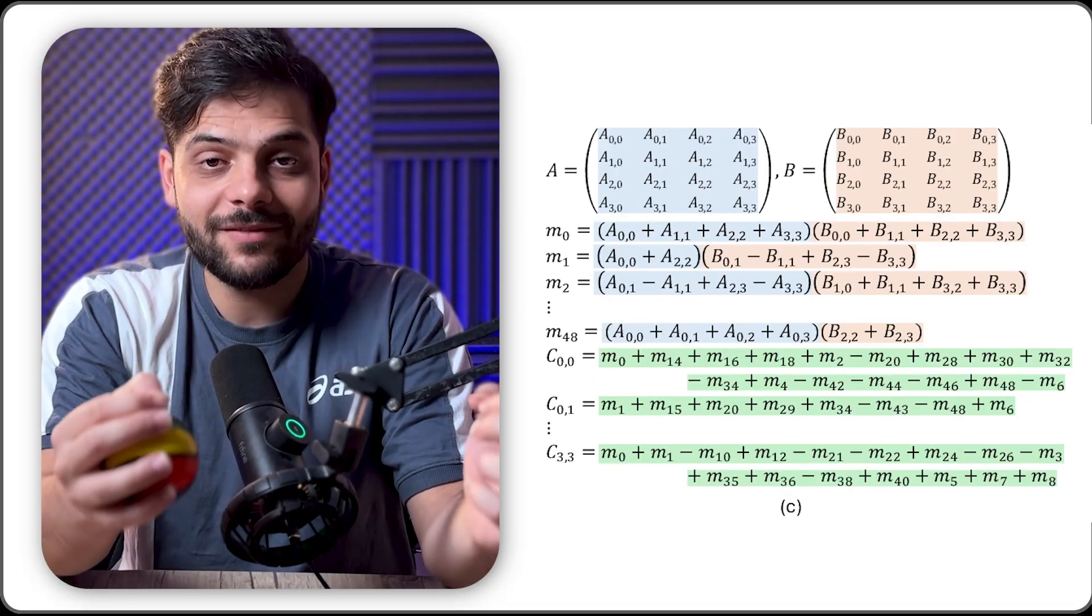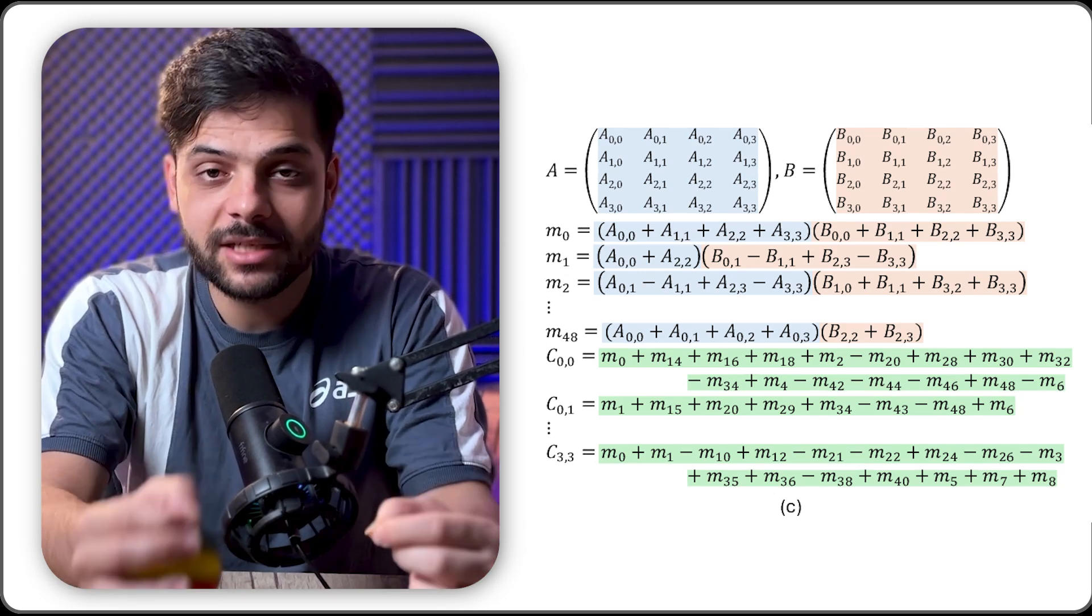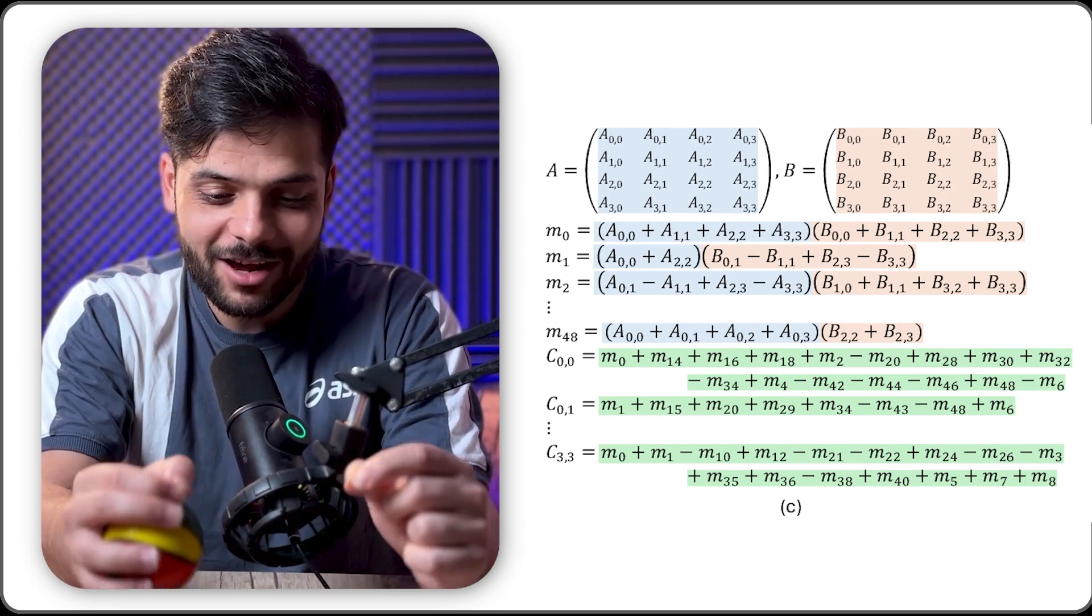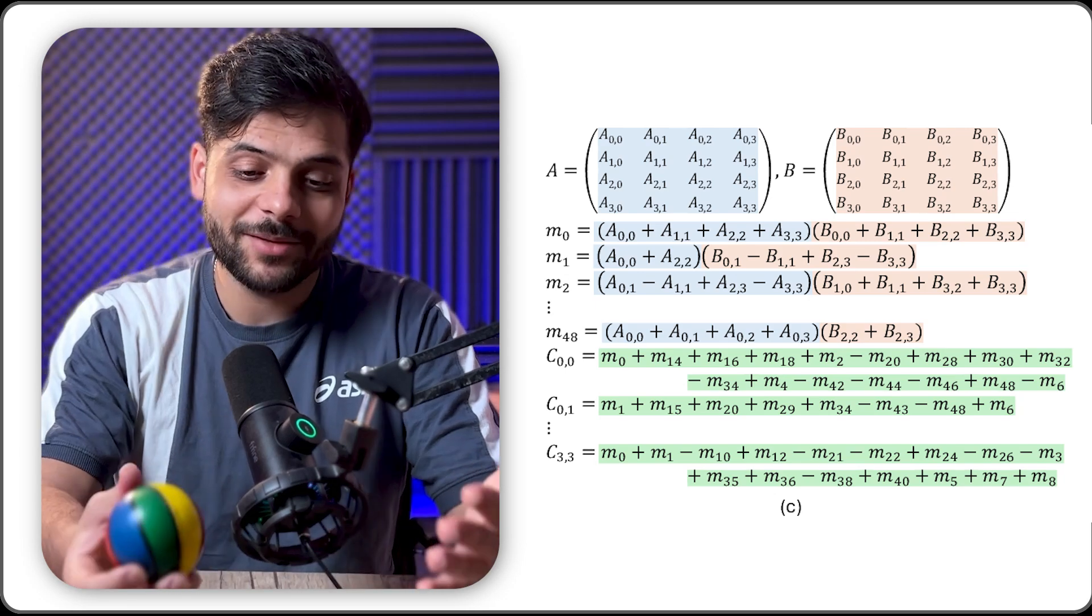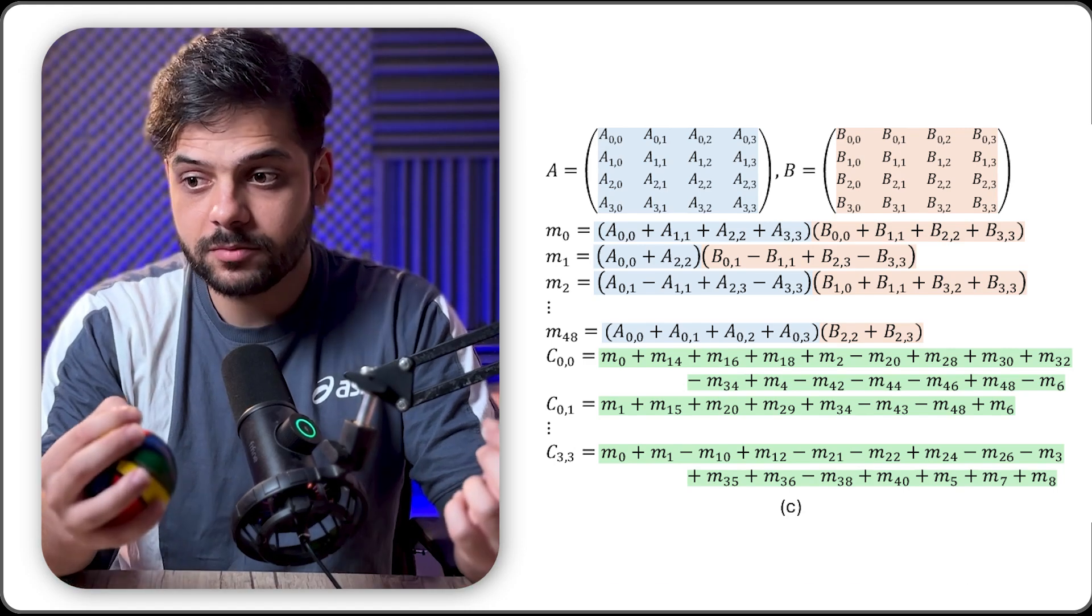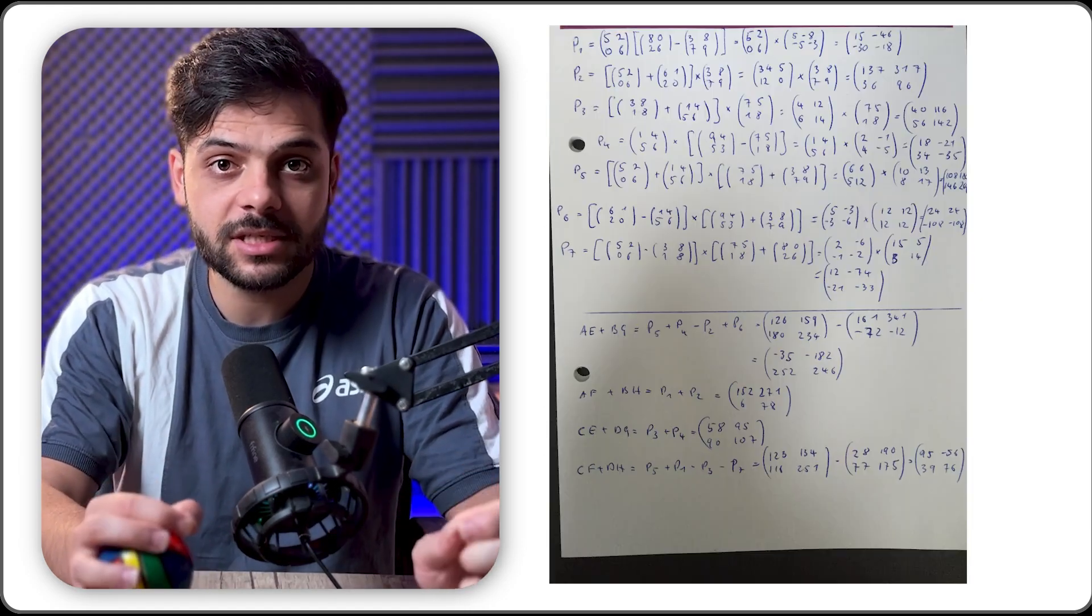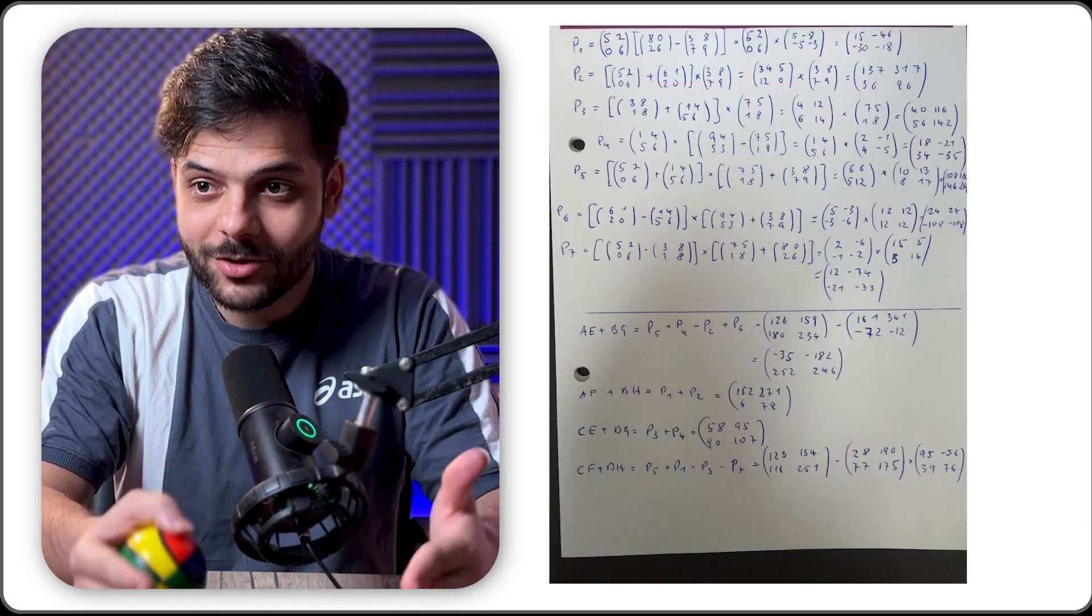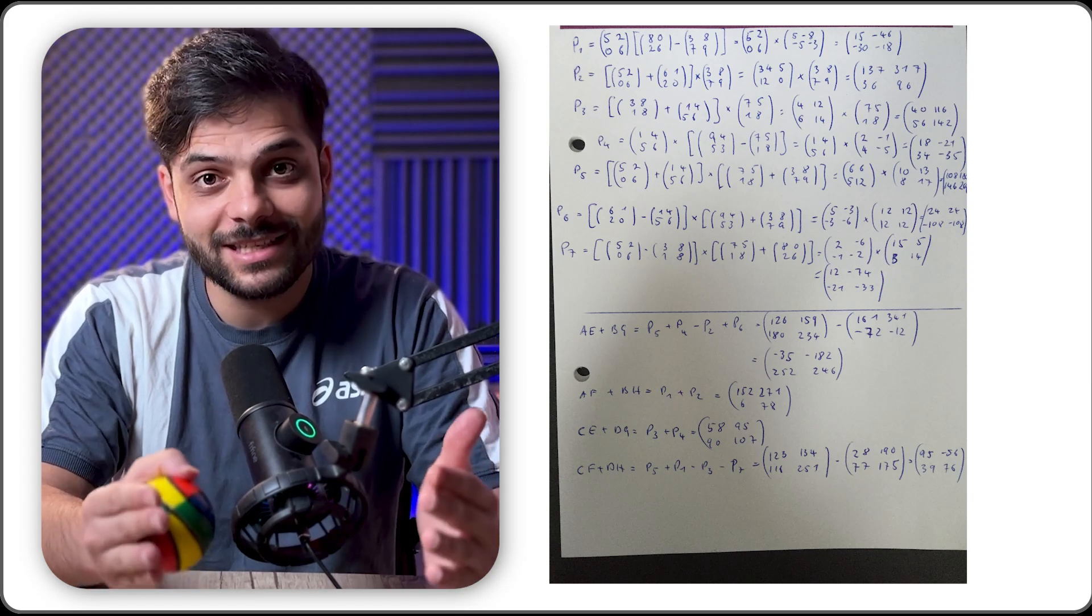AlphaEvolve just beat a 56-year-old algorithm on matrix multiplication. And that, I would call shocking. Keep in mind, because this is such a fundamental problem, scientists have tried for decades to squeeze every drop of efficiency out of these algorithms, and they couldn't do better for 56 years. It is fascinating how AlphaEvolve managed to find a novel way of looking at the problem to improve it.